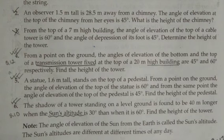A statue 1.6 meter tall stands on top of a pedestal. From a point on the ground, the angle of elevation of the top of the statue is 60 degrees. And from the same point, the angle of elevation of the top of the pedestal is 45 degrees. Find the height of the pedestal.